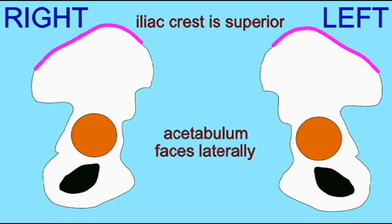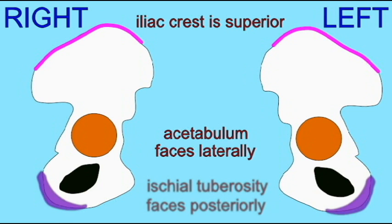And then finally, if you were to sit on your hands, you can feel the ischial tuberosity on your ischium bone facing posteriorly. This is the bony process to which the hamstrings attach.